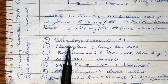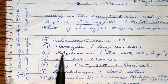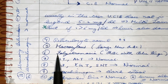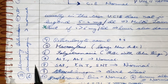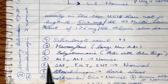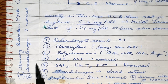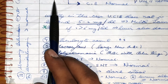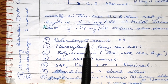Urinary bilirubin is absent because conjugated bilirubin is not entering the kidneys. However, urobilinogen — a converted product of conjugated bilirubin — is more than normal because of the increased conjugated bilirubin being formed and processed.